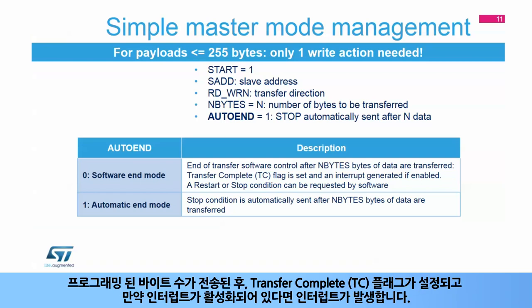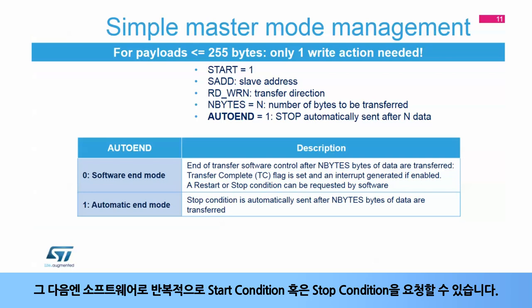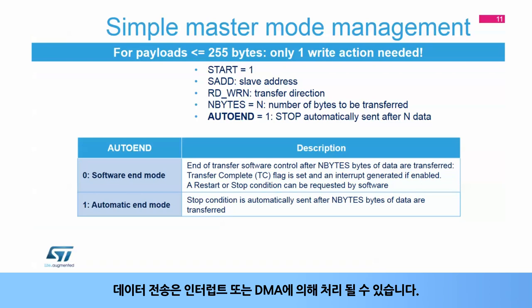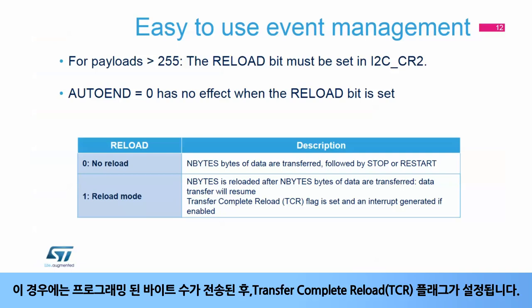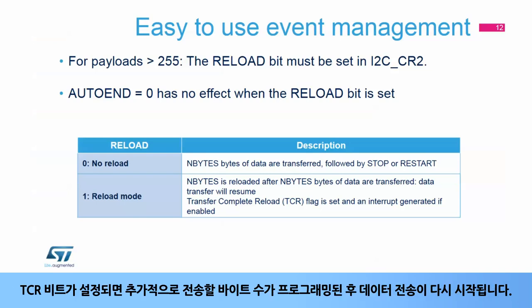After the programmed number of bytes is transferred, the transfer complete, or TC flag, is set and an interrupt is generated if enabled. Then a repeated start or a stop condition can be requested by software. The data transfer can be managed by interrupts or by the DMA. When the payload is greater than 255 bytes, the reload bit must be set in I2C control register 2. In this case, the transfer complete reload, or TCR flag, is set after the programmed number of bytes has been transferred. The additional number of bytes to be transferred is programmed when the TCR bit is set, and then the data transfer will resume.